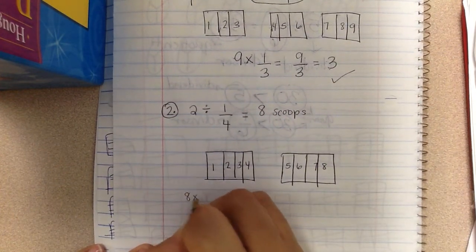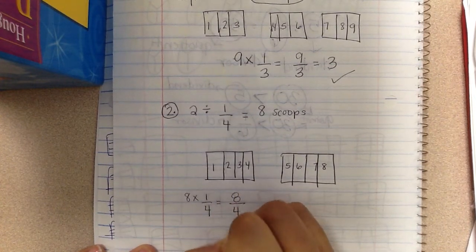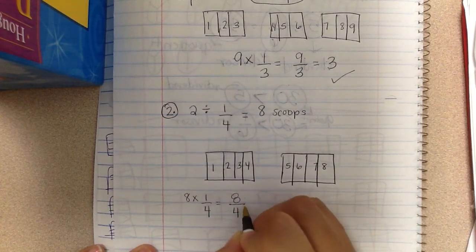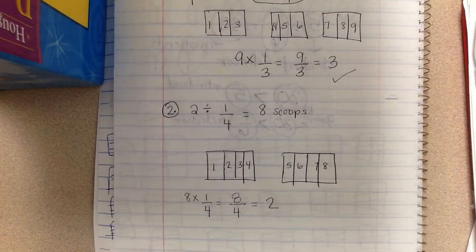I can check it. Eight times one fourth equals eight fourths. Eight divided by four equals two. And that matches the beginning of this equation. So that is correct.